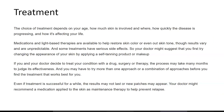The choice of treatment depends on your age, how much skin is involved, where the patches are, how quickly the disease is progressing, and how it's affecting your life. Medications and light-based therapies are available to help restore skin color or even out skin tone, though results vary and are unpredictable. Because some treatments have serious side effects, your doctor might first suggest changing the appearance of your skin using a self-tanning product or makeup. Treatment with drugs, surgery, or therapy may take many months to judge effectiveness, and you may need to try more than one approach.